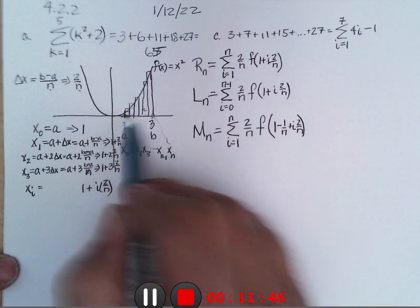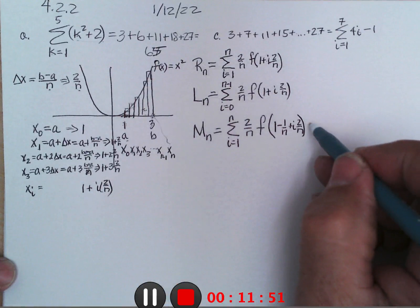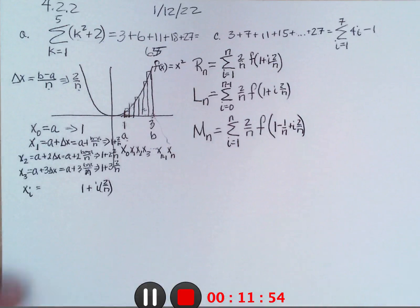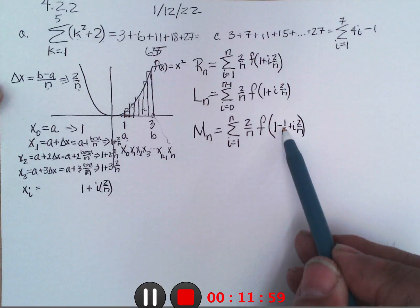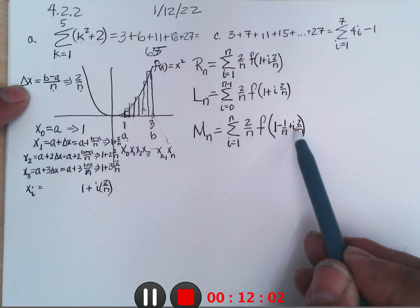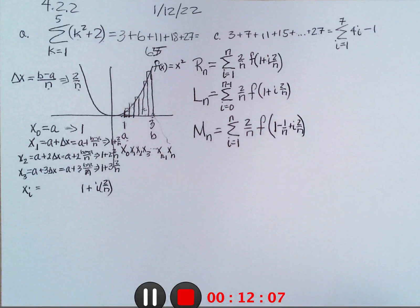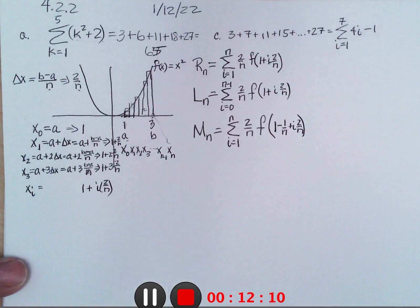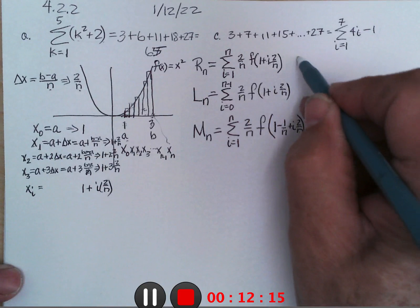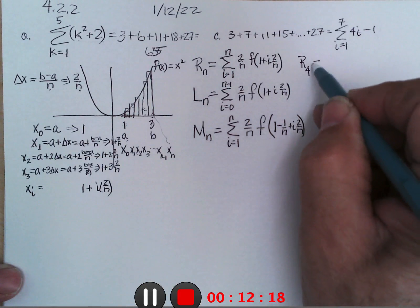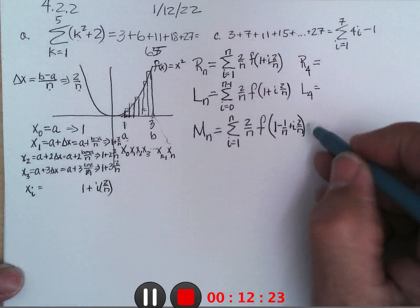And that would get me to the middle of that first rectangle, find the height there, and then the height there, and so on. And so that would be the midpoint one: starting place, back up half a width, half a delta x, and then i full delta x's.